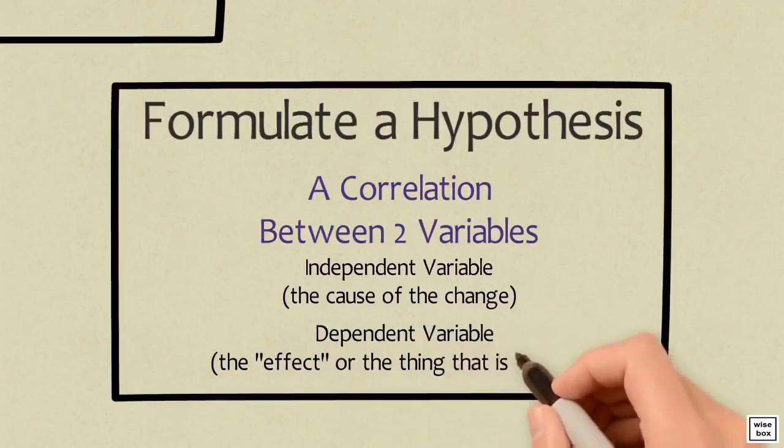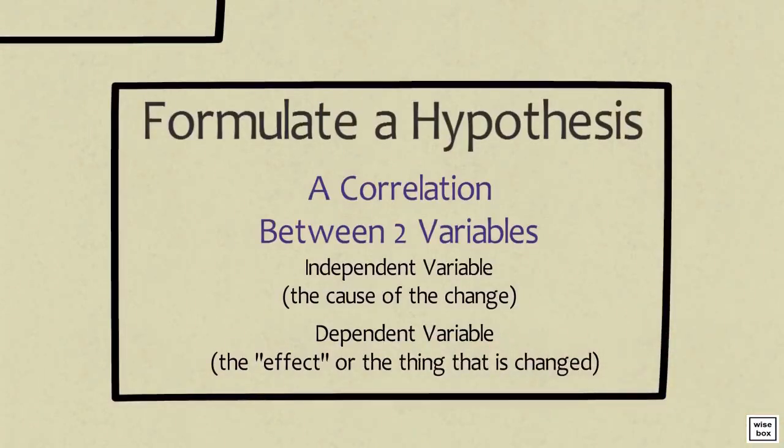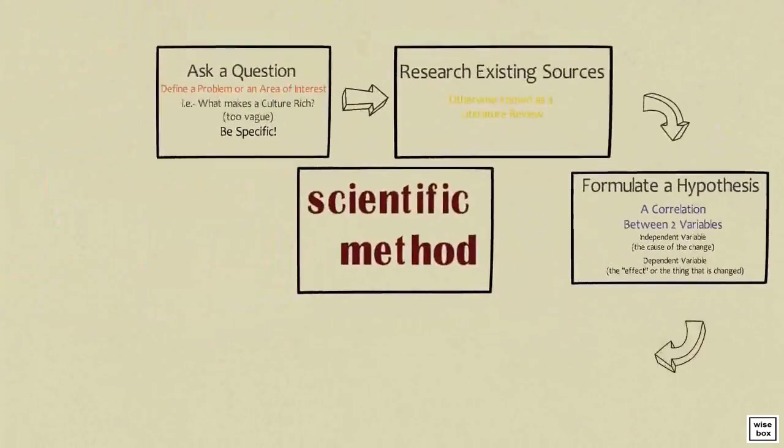In other words, the dependent variable depends on the independent variable for its results. If we are studying gender and want to know about how people in the workplace are treated based on identifying as male or female, identifying as male or female is the independent variable, and how they are treated is the dependent variable.